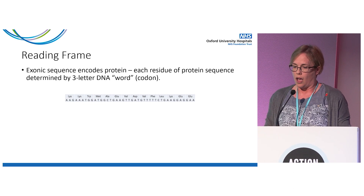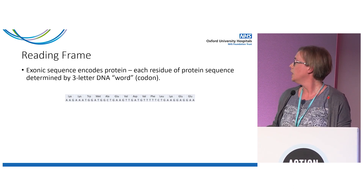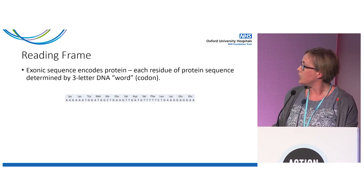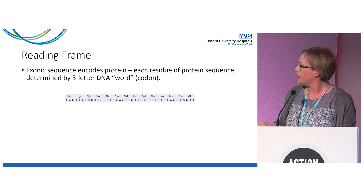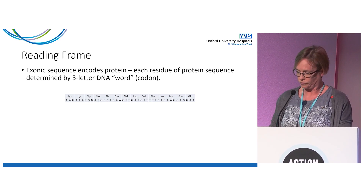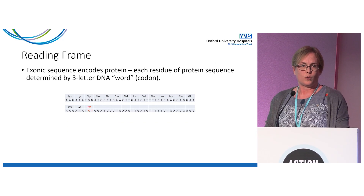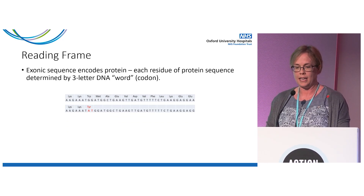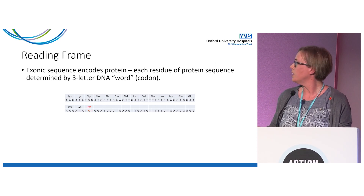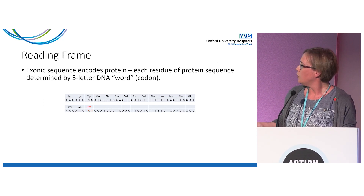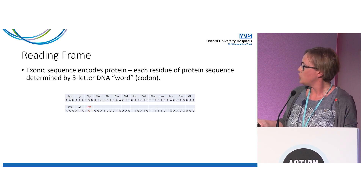The exons are made up of DNA and they're translated into proteins in three-letter words — three letters of DNA determines which protein residue is next in the sequence. In this example, the first three letters AAG encodes the protein residue lysine. Now, if you add in or take away a number of letters of DNA that isn't divisible by three — in this example, I've added in an A and a T — not only do you change this word from TGG to TAT, changing the protein residue from tryptophan to tyrosine.